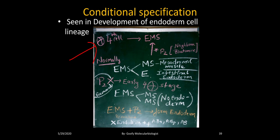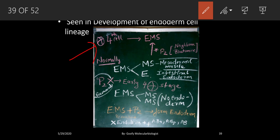During the four-cell stage, the EMS cell gets a signal from its neighboring cell, the P2 blastomere. Normally, the EMS cell divides into two cells: the MS cell, which becomes mesodermal muscle, and the E cell, which becomes the intestinal endoderm. But if the P2 cell is removed during the early four-cell stage, the EMS will produce two MS cells instead — only mesodermal muscle will be seen and there will be no endoderm.